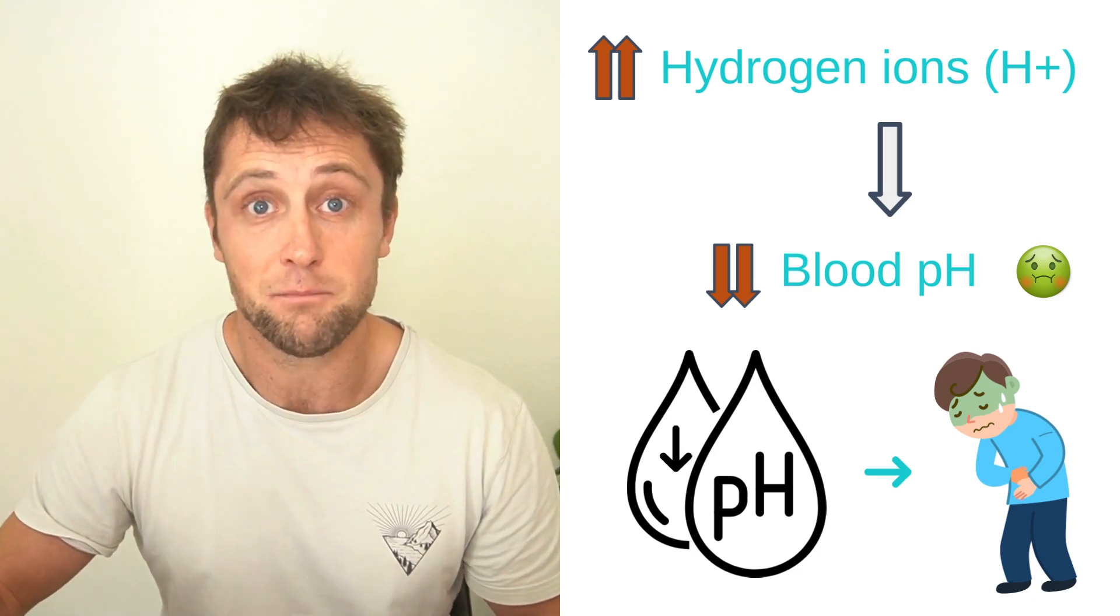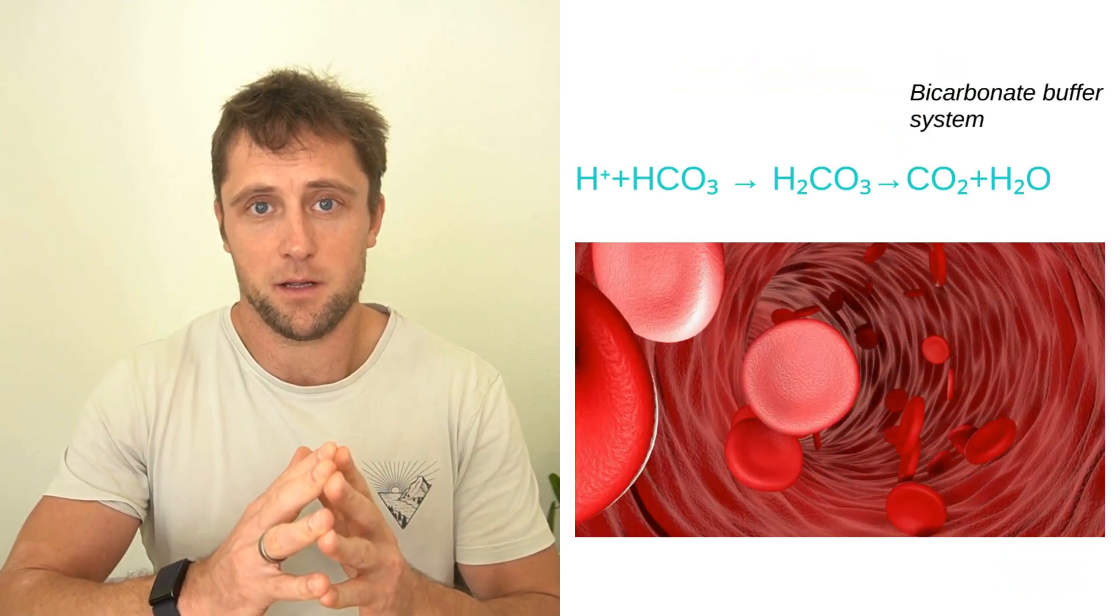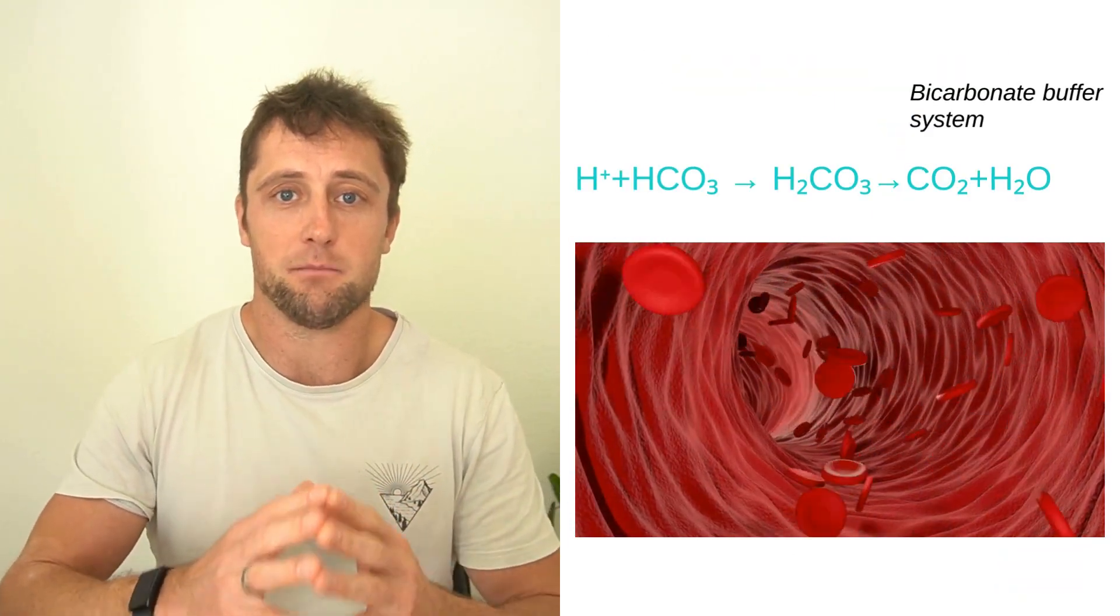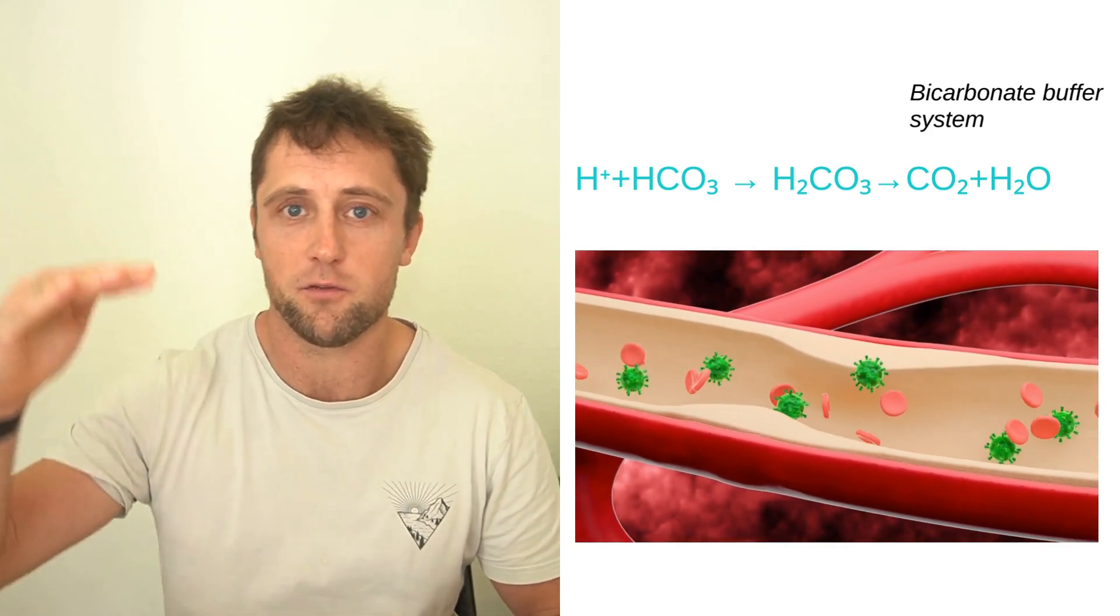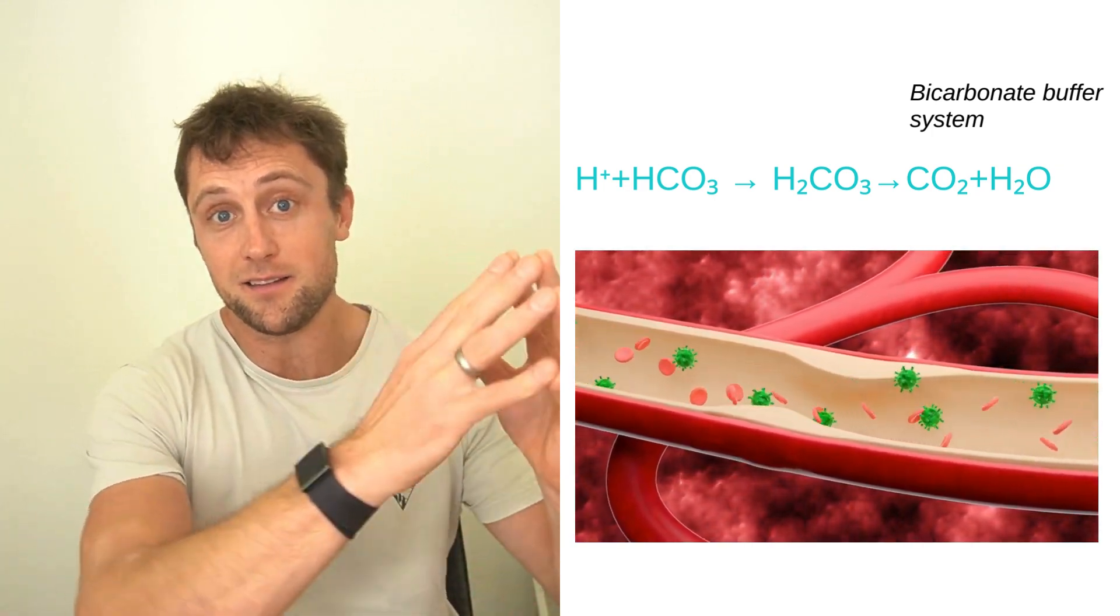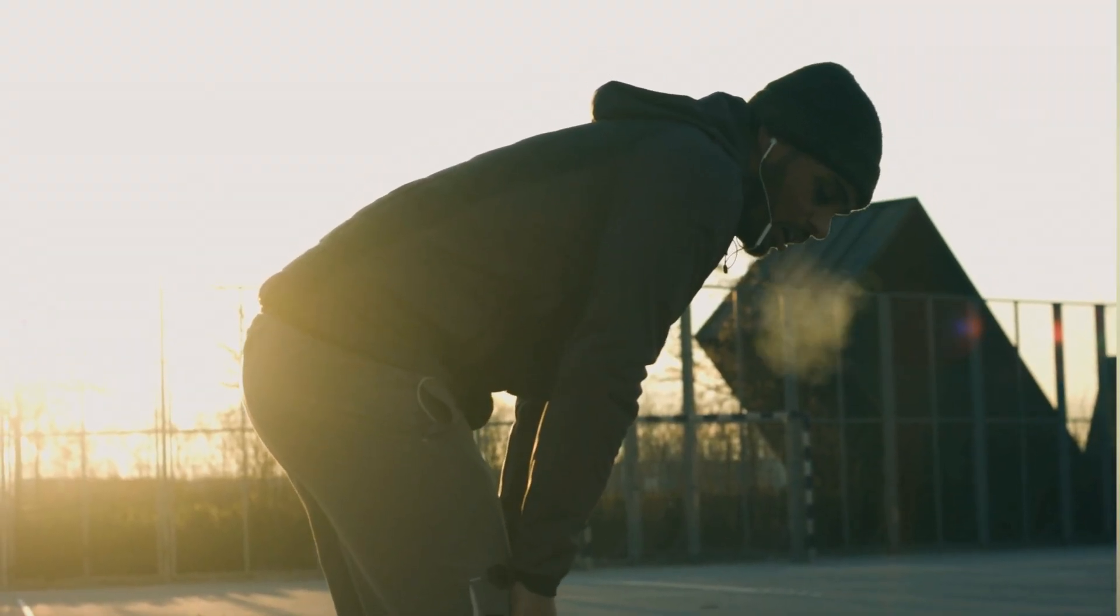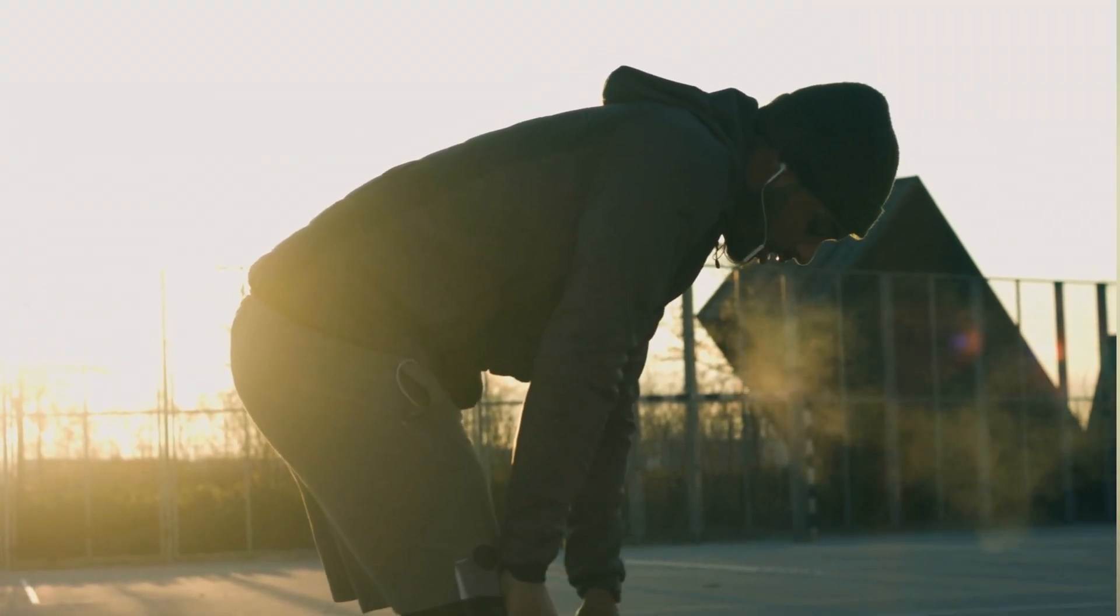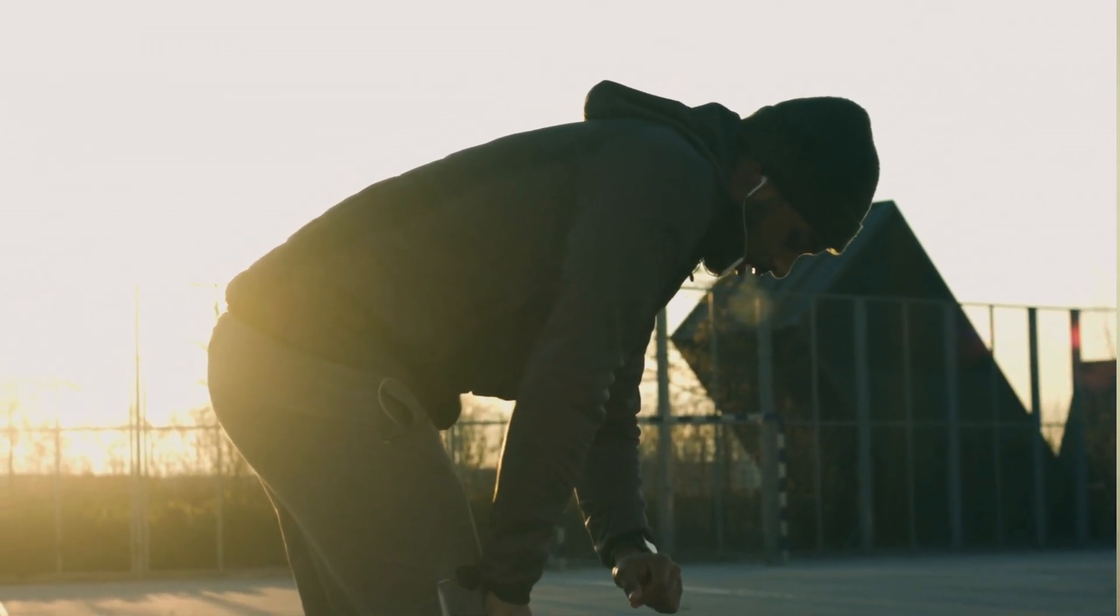The body has a natural buffer system. We call this the bicarbonate buffer system. And it helps maintaining this pH balance, this very fine balance between 7.3 and 7.4. Why or how? By converting the excess hydrogen ions into carbon dioxide and water, which we then obviously exhale later on. However, intense exercise like bike sprints can completely overwhelm this system, dropping the blood pH and leading to this feeling of sickness and nausea.